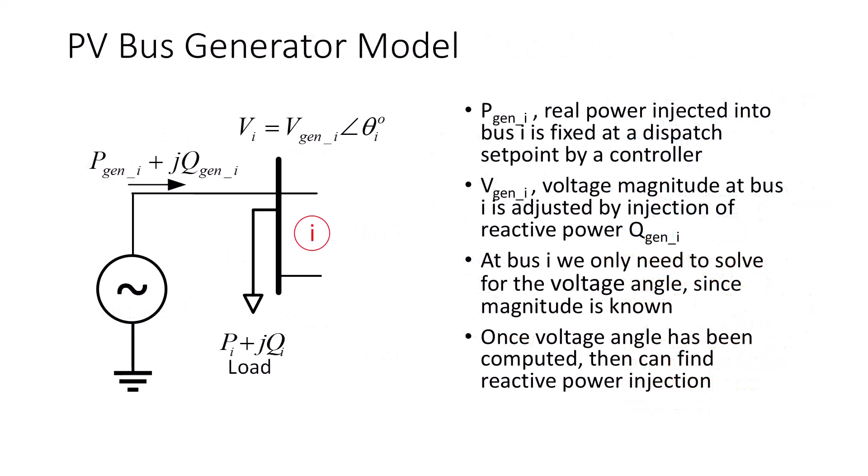Let's take a closer look at the PV bus generator model as connected to bus I. We will also model a PV bus local constant power load. The real power injection, PGen, is a known quantity that is specified in the input bus data set. The voltage magnitude, VGen at bus I, also needs to be specified. Since voltage magnitude is known, then we only need to compute the voltage angle theta at a PV bus. The reactive power injection, QGen, is computed once the voltage magnitude and angle are known.